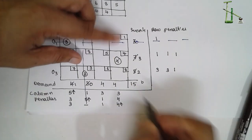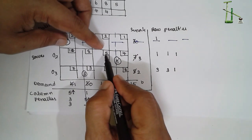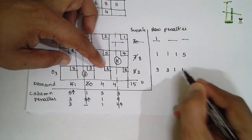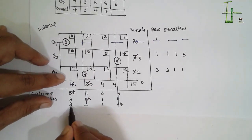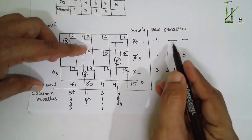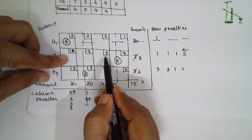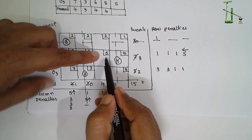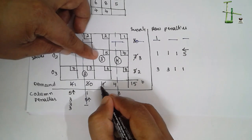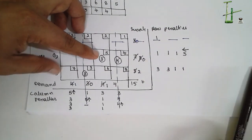Next iteration: 10 minus 5 = 5; 7 minus 6 = 1; 10 minus 7 = 3; 6 minus 5 = 1. Among row and column penalties, select the larger value — the largest is 5. Move to the cell with values 10 and 5; select the smallest value, which is 5. Supply is 3, so write 3 here. Demand reduces: 4 minus 3 = 1. Supply becomes 0 — eliminate this part completely.